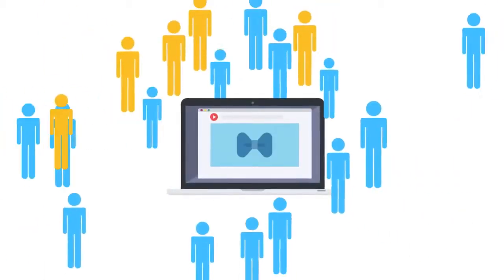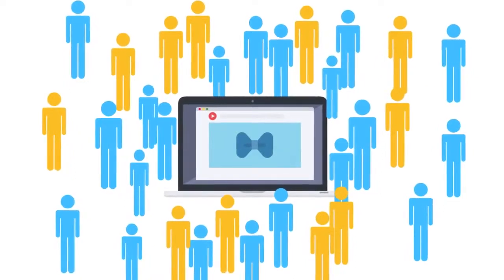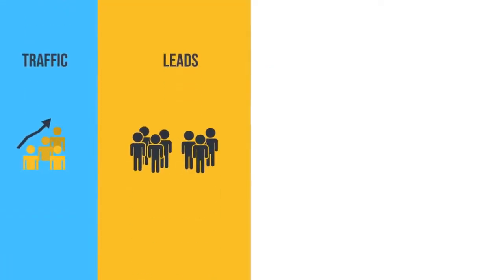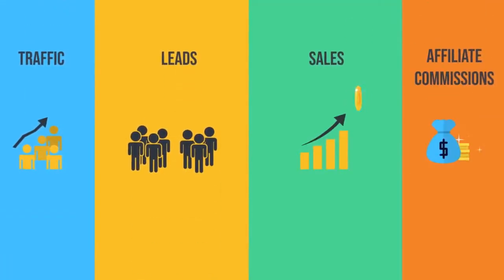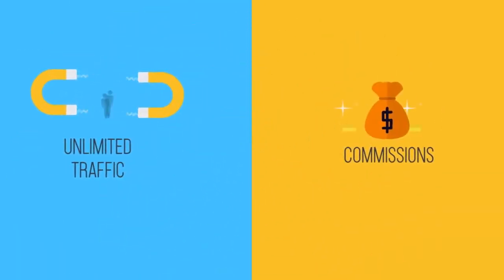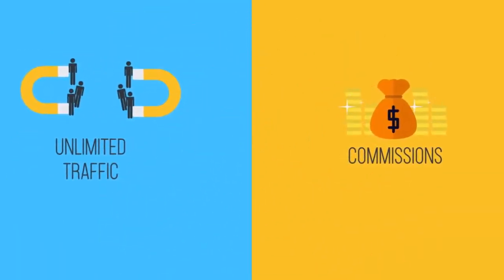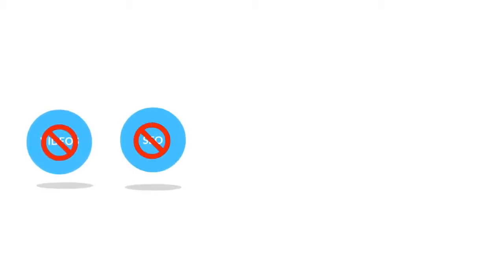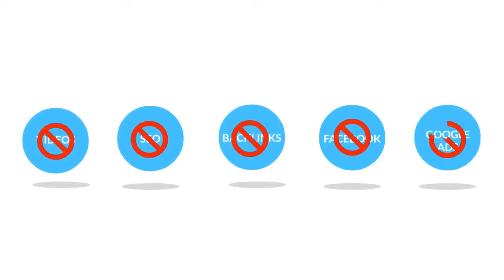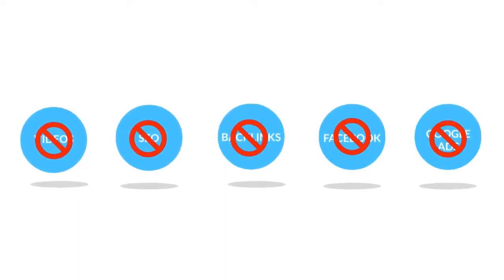Did you know that you can now get an unlimited number of people rushing to your website or link starting in just 60 seconds? Which will get you traffic, leads, sales and affiliate commissions? Real unlimited traffic and commissions is finally possible without ever creating videos or writing content for SEO, or building backlinks, or spending all your money on Facebook or Google Ads.